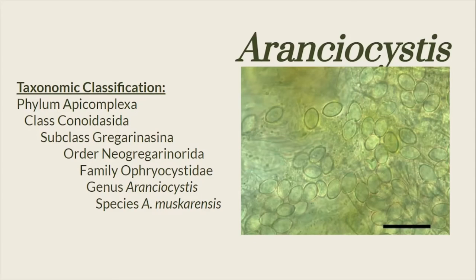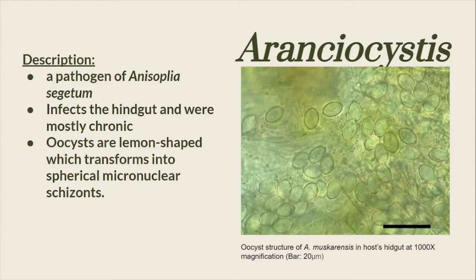The next species is Aranthiocystis muscarensis. This species is known as a pathogen of Anisopleia segetum. Its infections are chronic and mainly located in the hindgut. Its oocysts are lemon-shaped, which transform into spherical micronuclear schizons.